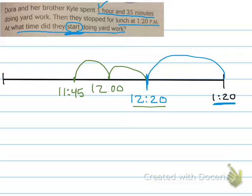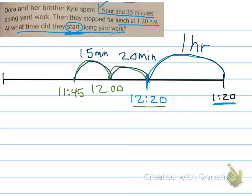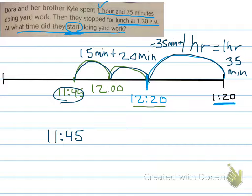There we are. So let's double check and make sure that I went back an hour and 35 minutes. So this was one hour, this was 20 minutes, and this was another 15 minutes. So 15 minutes plus 20 minutes, that's 35 minutes. Plus one hour, yes. That was one hour and 35 minutes, which is what the problem asked us to go back. That's how you can check your work too. So what time did they start doing yard work? They started at 11:45 AM. Nice, good job, Dora and her brother Kyle.